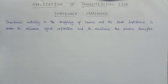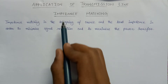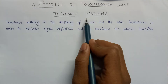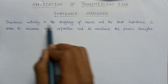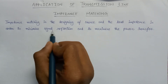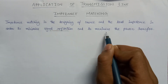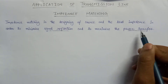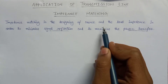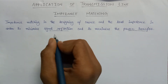Welcome. In this lecture we are going to discuss about applications of transmission lines. The most important application associated with the transmission line is impedance matching. Impedance matching is the designing of the source and the load impedance in order to minimize the signal reflection and to maximize the power transfer — it is basically the matching of the source impedance and the load impedance.